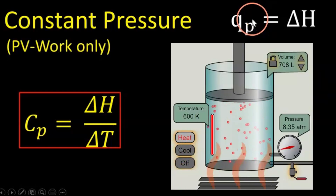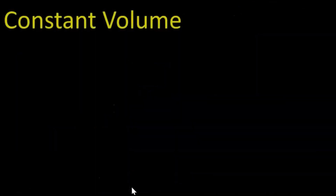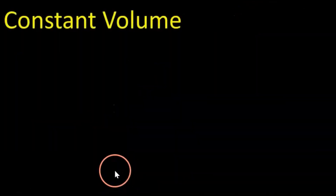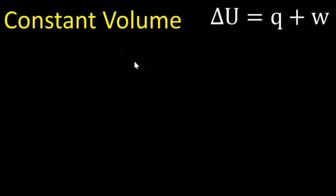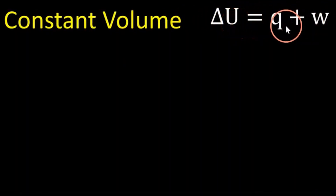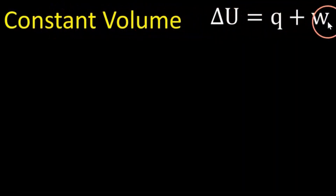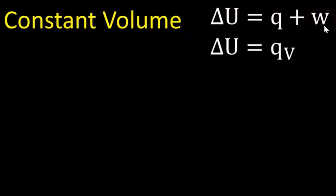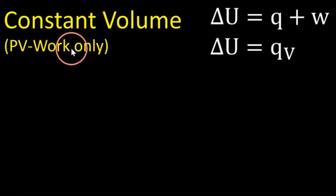You can see on this simulation, the pressure is constant, and as we inject heat into it, it's driving the piston up and the system is getting hotter — absorbing energy as heat but also performing work under constant pressure. Next is constant volume. Using the first law of thermodynamics for a closed system, the change in internal energy equals the heat plus the work. If there's constant volume and we're assuming pressure-volume work only, then the work is zero.